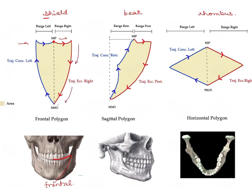Take to maximum mouth opening. At this point, this is in the same line. Repeat the same on the left side — take from maximum intercuspation to the left side as much as you can laterally, and open your mouth and come straight forward, returning to maximum mouth opening. This gives you movements in the frontal plane when visualized from the frontal aspect.